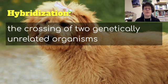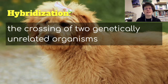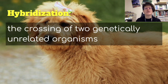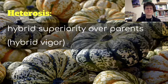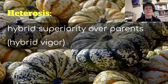One type of mass selection is hybridization — the crossing of two genetically unrelated organisms. For example, I have here a golden doodle, produced by crossing a poodle with a golden retriever. Hybridization tends to produce heterosis, which is hybrid superiority over parents. We call this hybrid vigor, and it usually makes stronger organisms.